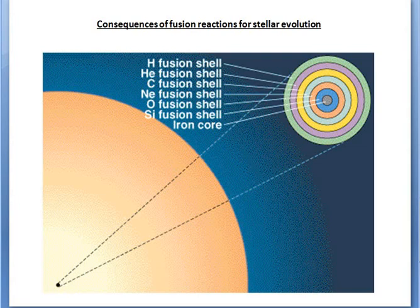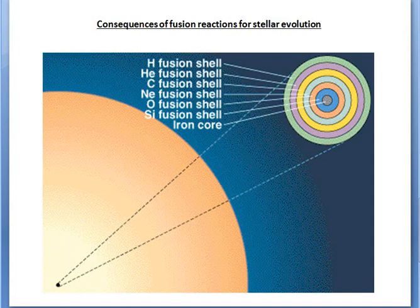The third consequence is that each successive reaction has a smaller Δm/m — that is, it produces less energy. The Q-value during successive phases keeps decreasing, which means the reaction rate has to be higher and the fusion faster in order to provide the star's luminosity.